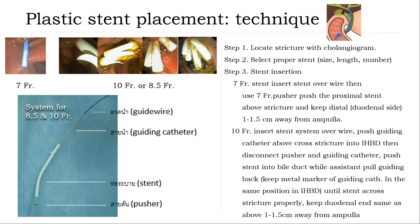Technique of plastic stent placement. If you use a 7 French stent, just the wire and pusher. If you decide to place an 8.5 or 10 French stent, you need a guidewire, guiding catheter, and stent, then pusher. This is the system for 8.5 to 10 French stent placement.